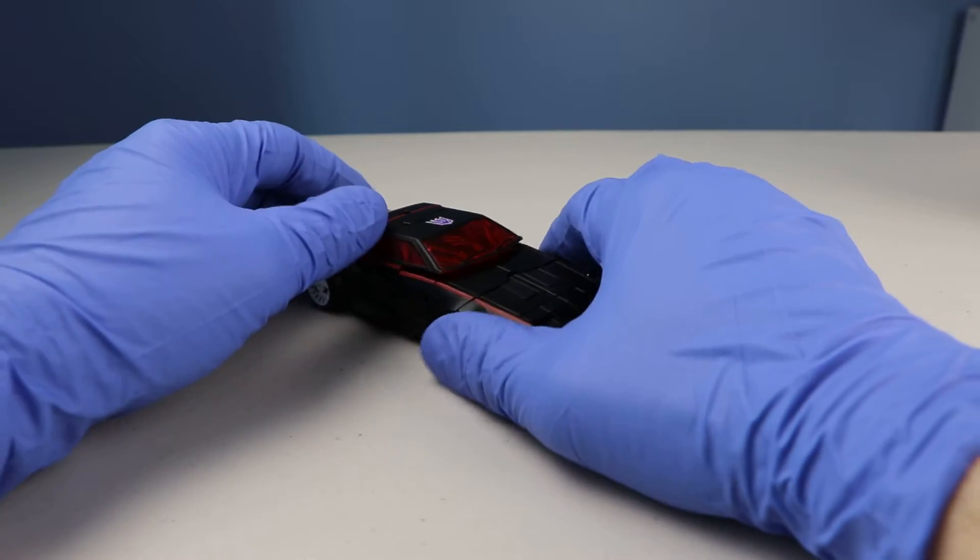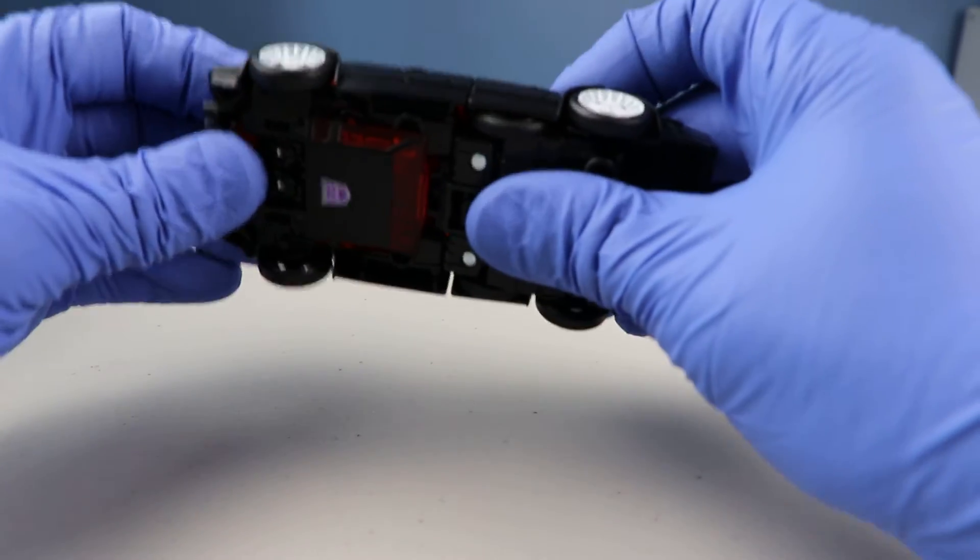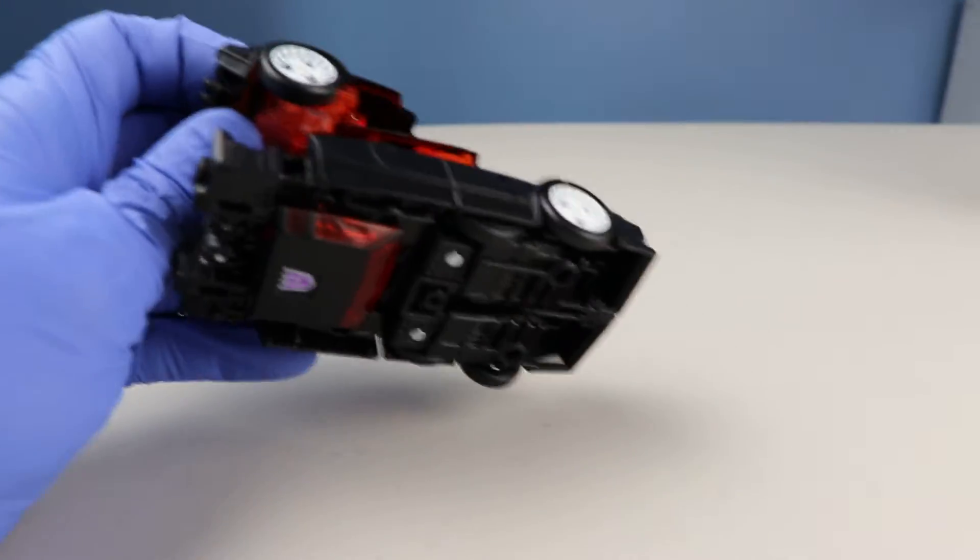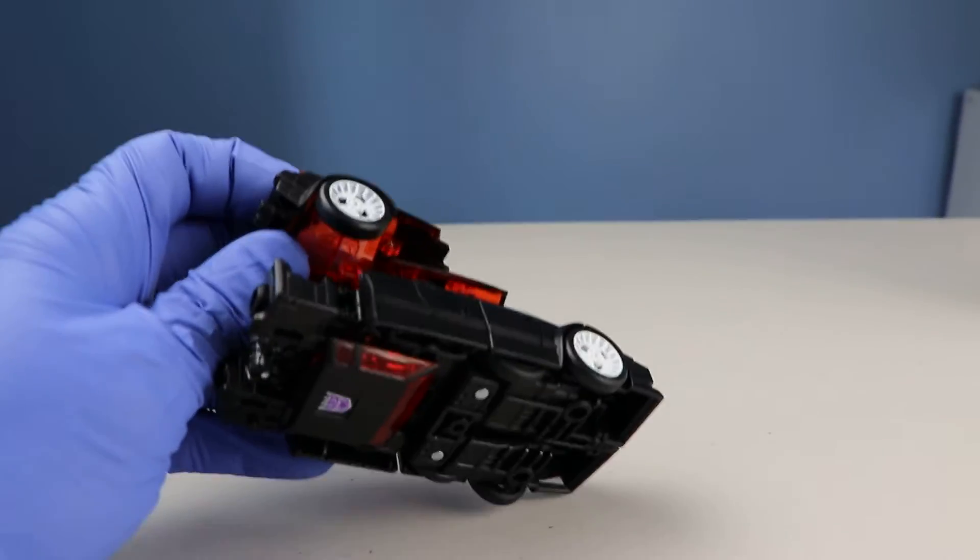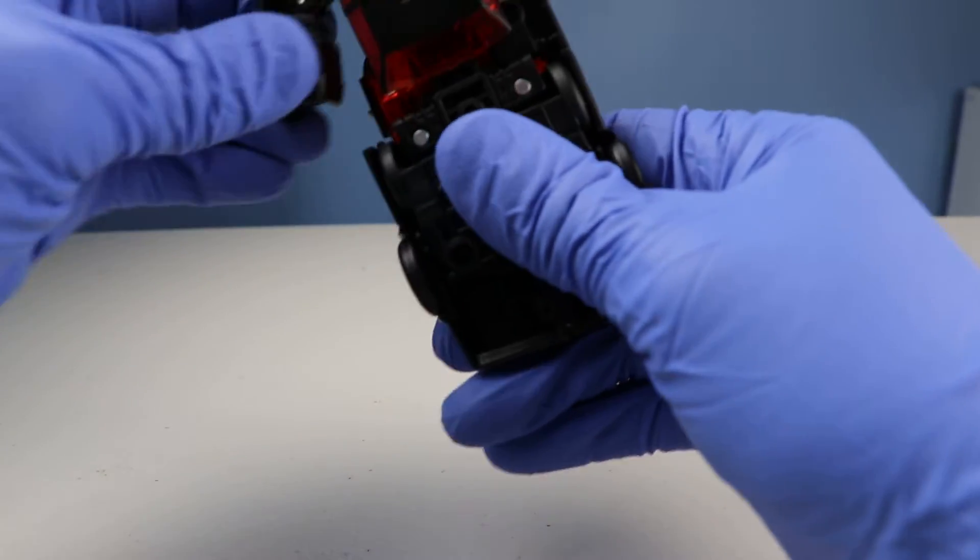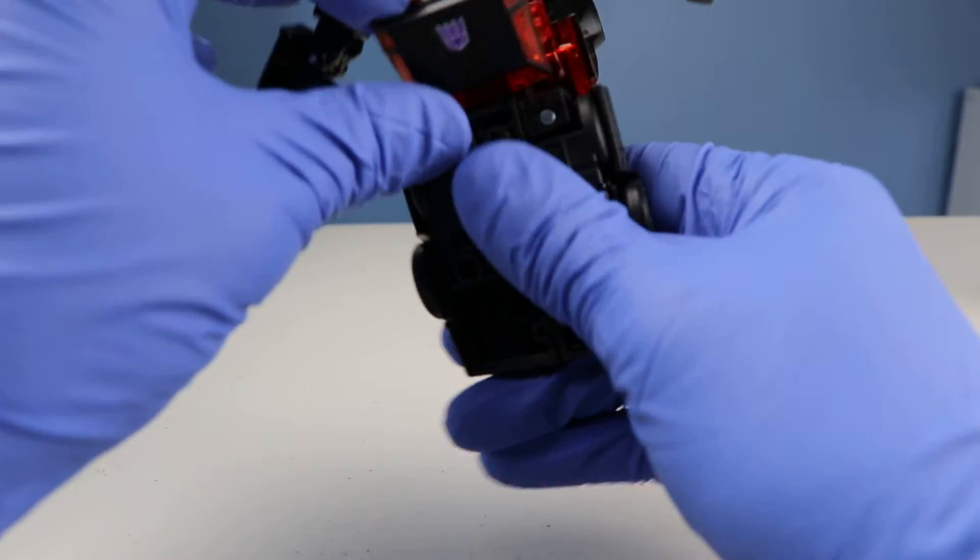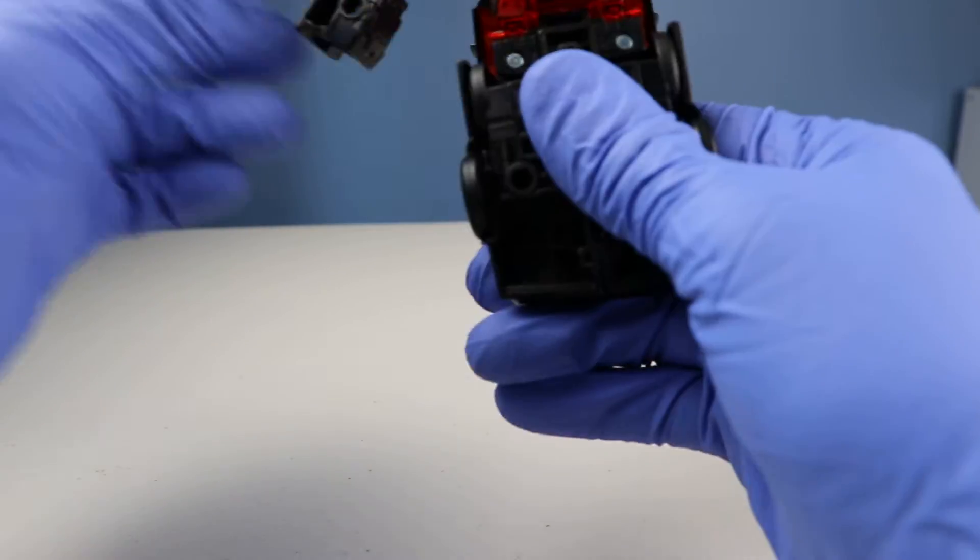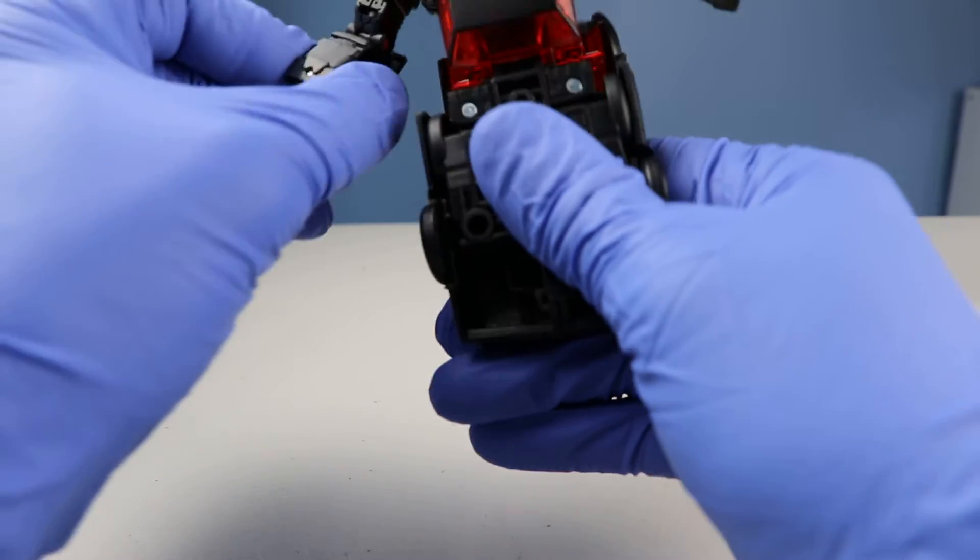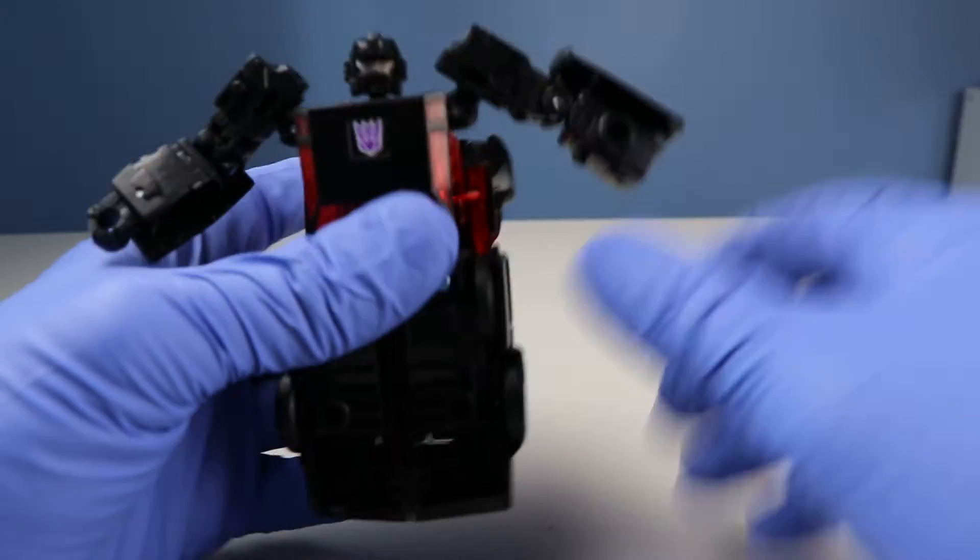And now let's transform him back. So first we'll start with the back. Pop the back up. Flip the wheels in. Bring out the arms. Chest forward. Head up. Rotate the forearms. Flip out the hands.